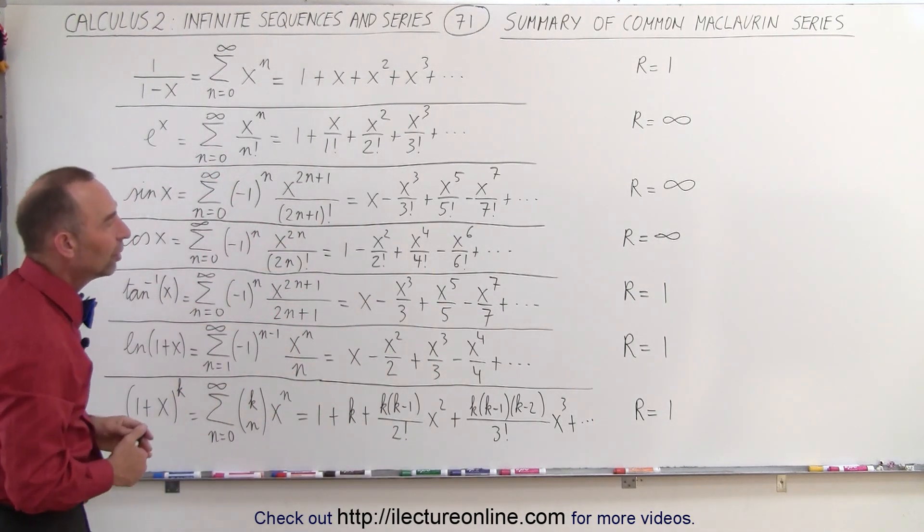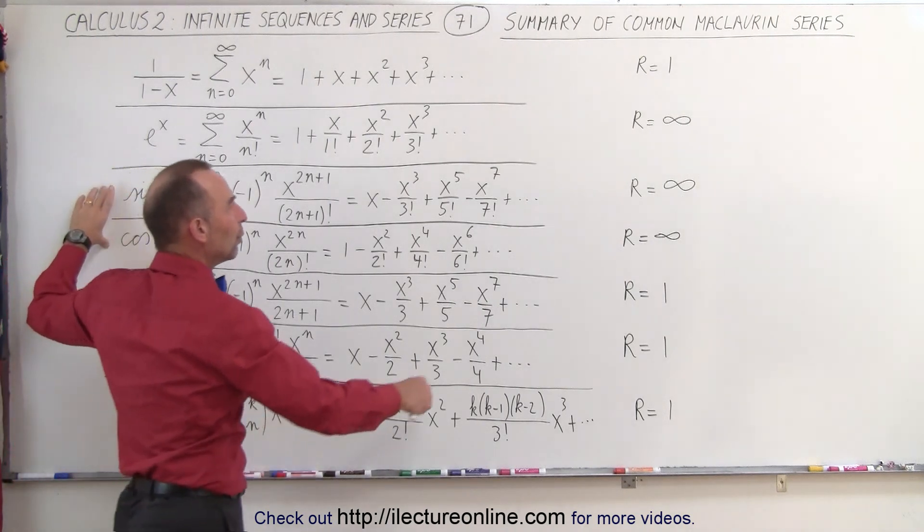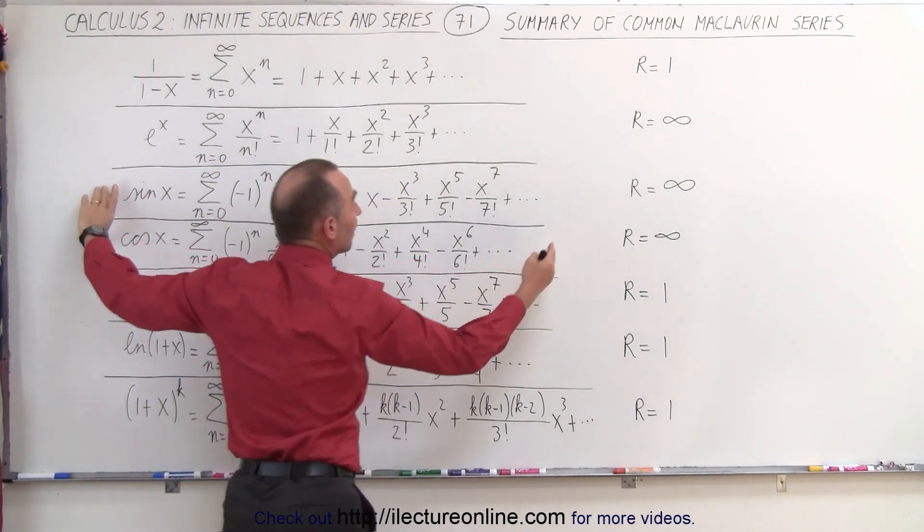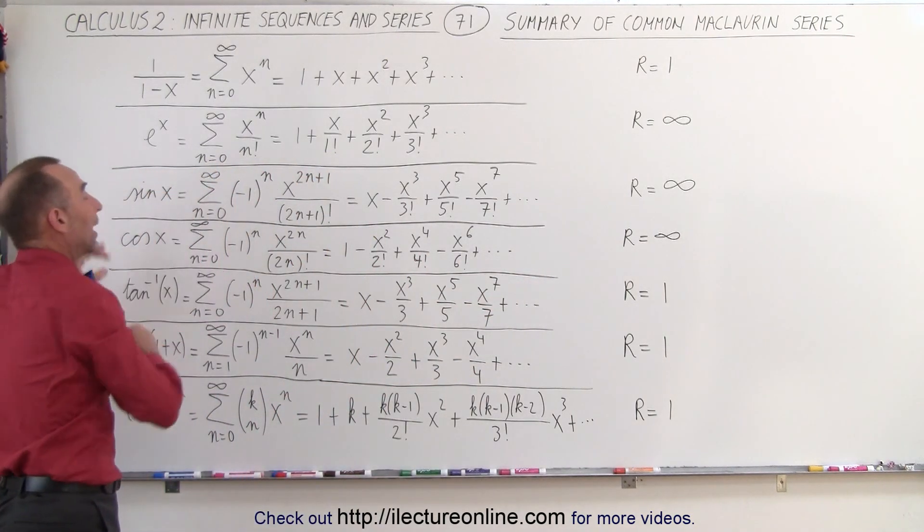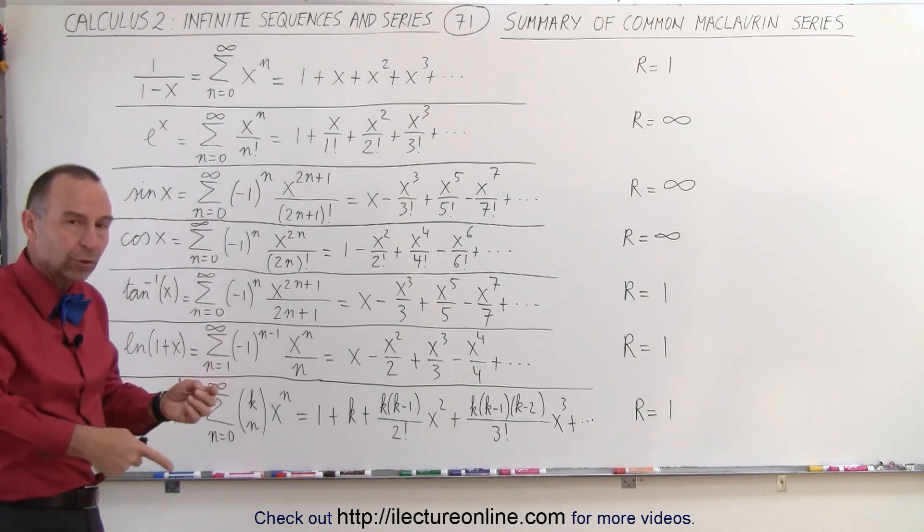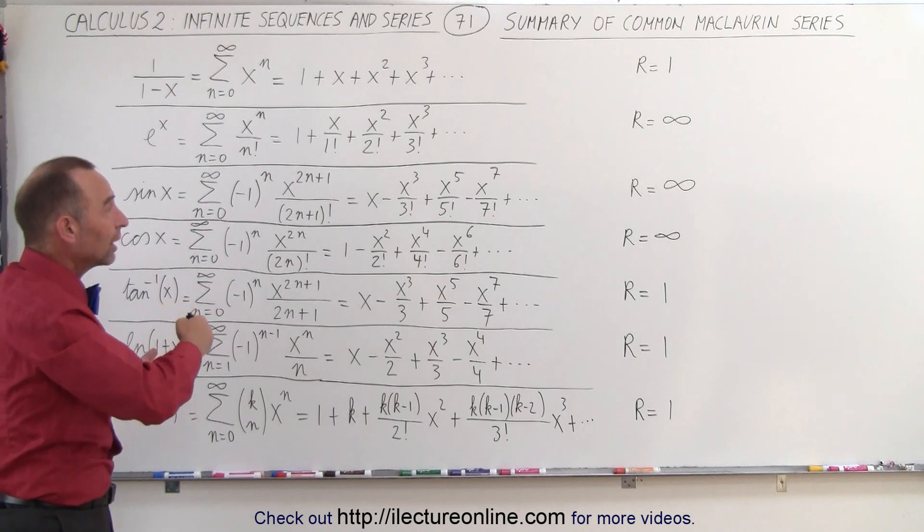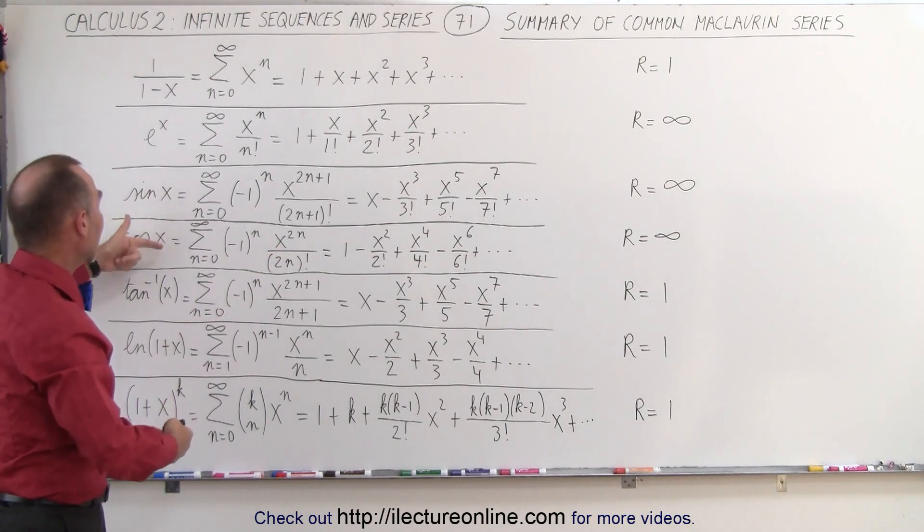For all three functions, sine, cosine, and arctangent, for the sine and the cosine, the radius of convergence is infinity. In other words, we can plug in any value for x, because they're what we call rotating functions. Every time we go through 360 degrees or 2 pi radians, we start over again, so we can plug in any value for x.